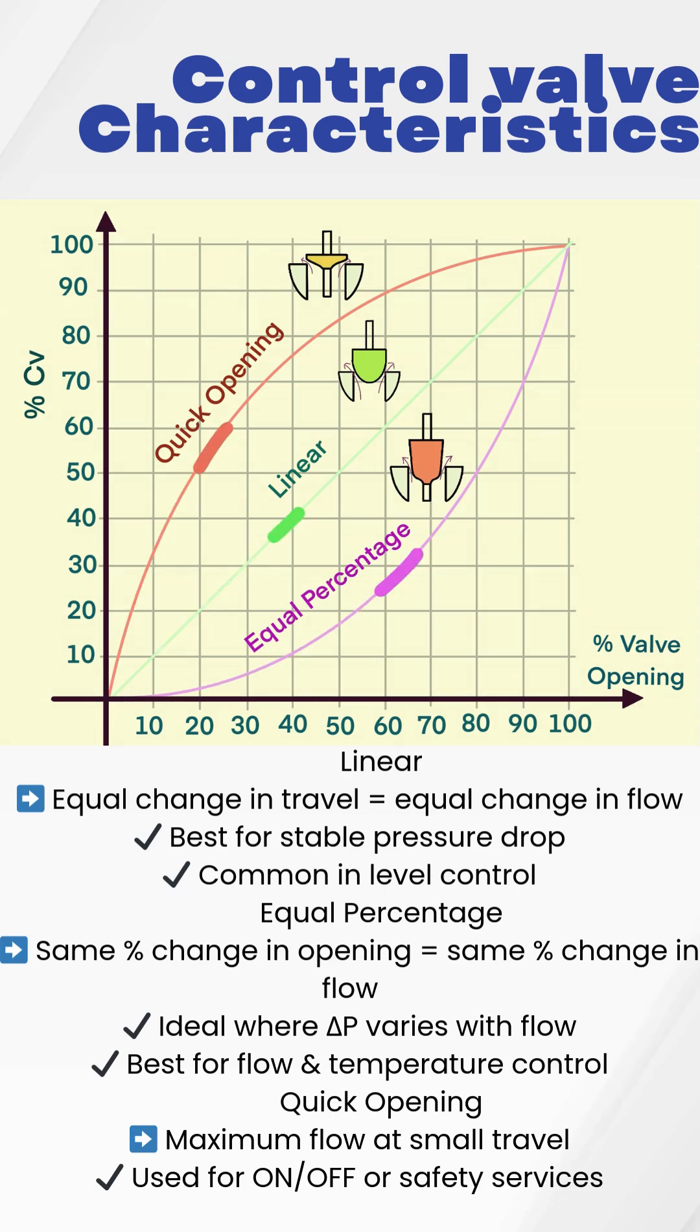So how do you choose? If your process has wide flow variation and changing pressure, go for equal percentage.